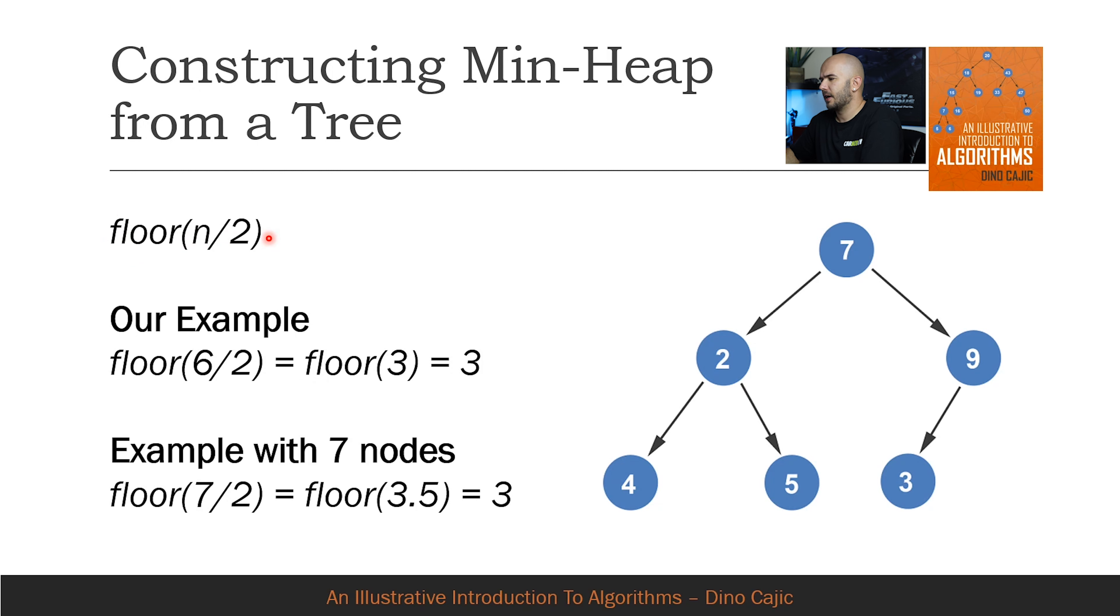The reason for the floor is due to uneven number of nodes. If the number of nodes was seven, the starting point would be at floor of seven over two. The floor of 3.5 is equal to three.